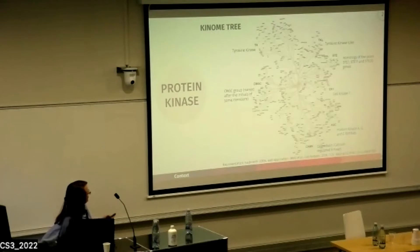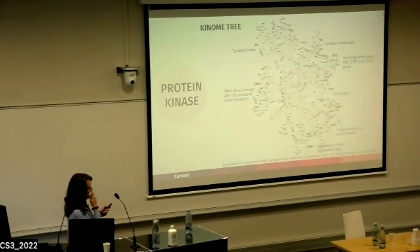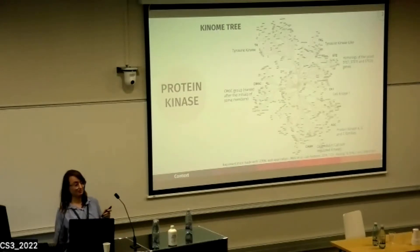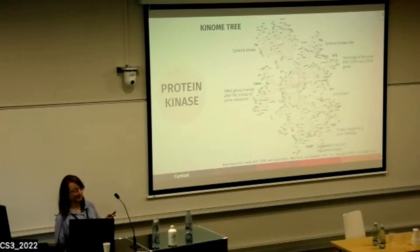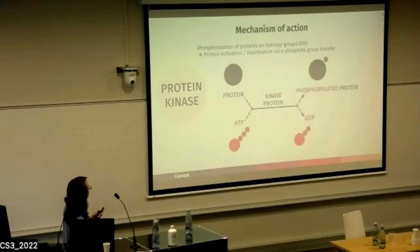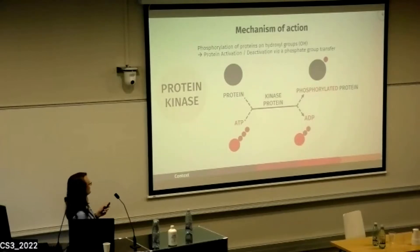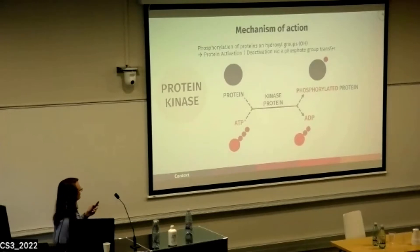This is the classical representation of the kinome tree — all the protein kinases we know in the human body, about 500. They can be classified according to their substrate, structure, localization, or role inside the cell. Despite being very diverse, those proteins share the exact same mechanism of action. Kinases are proteins able to either activate or deactivate another protein.